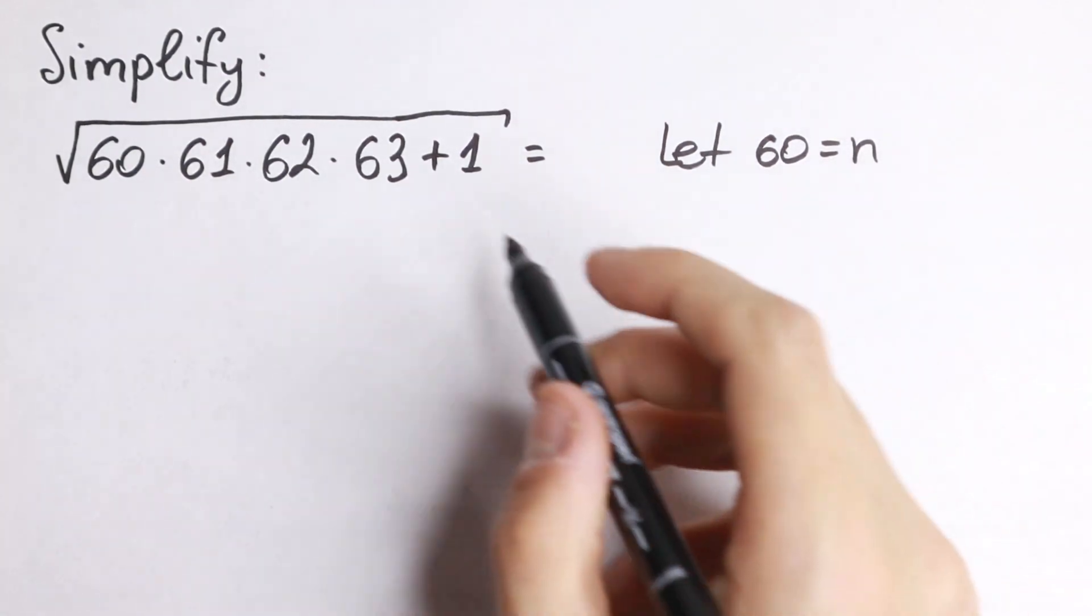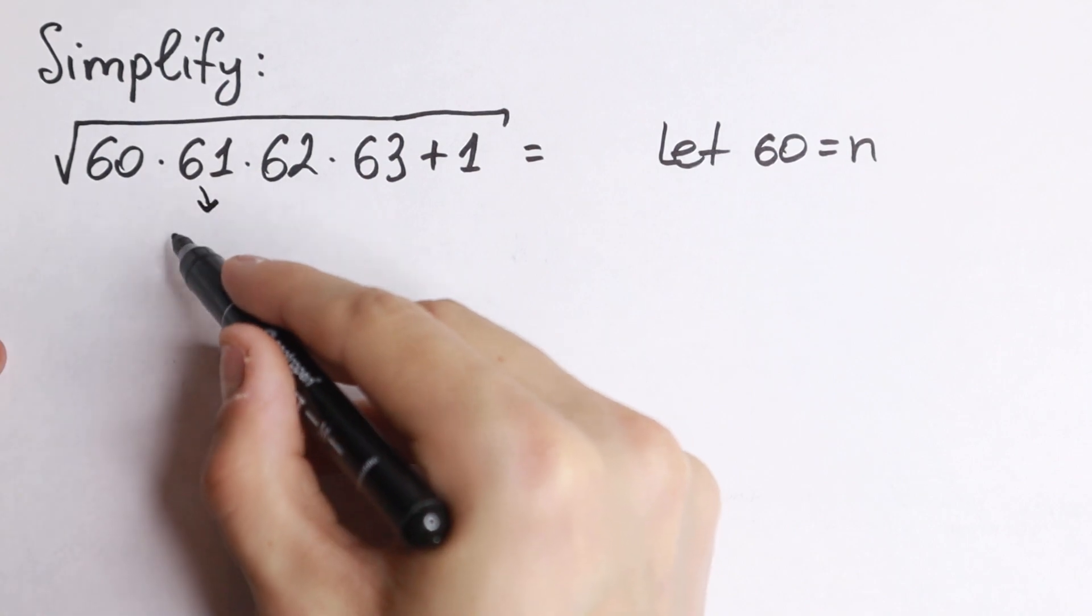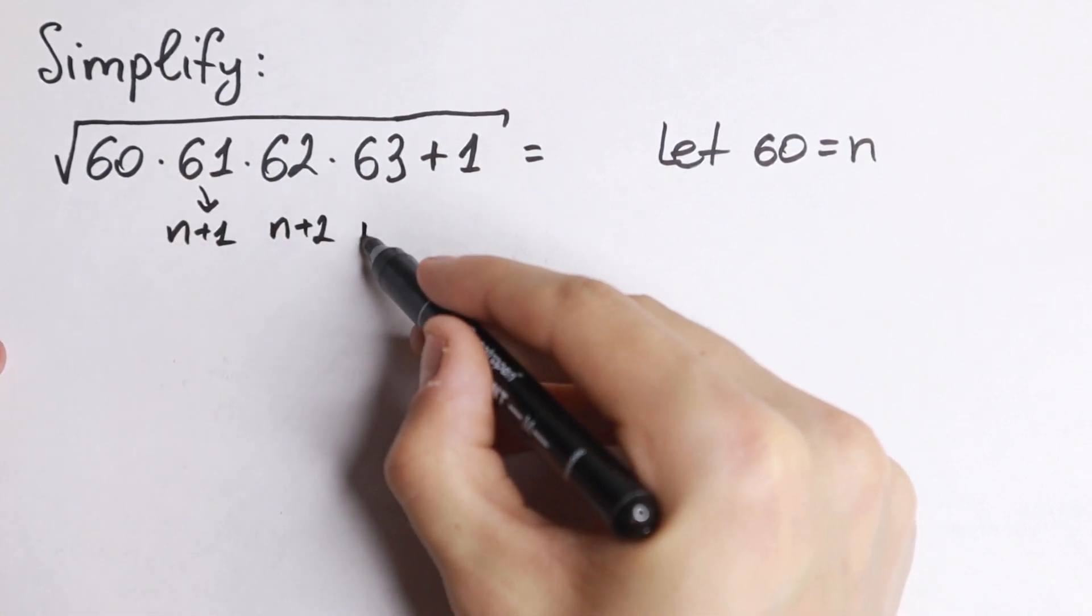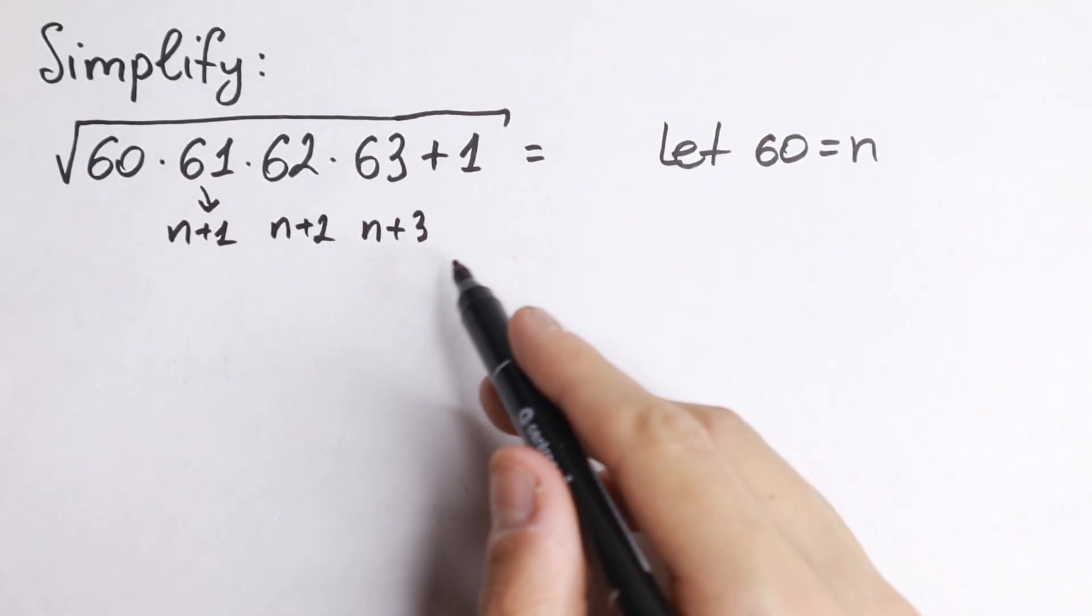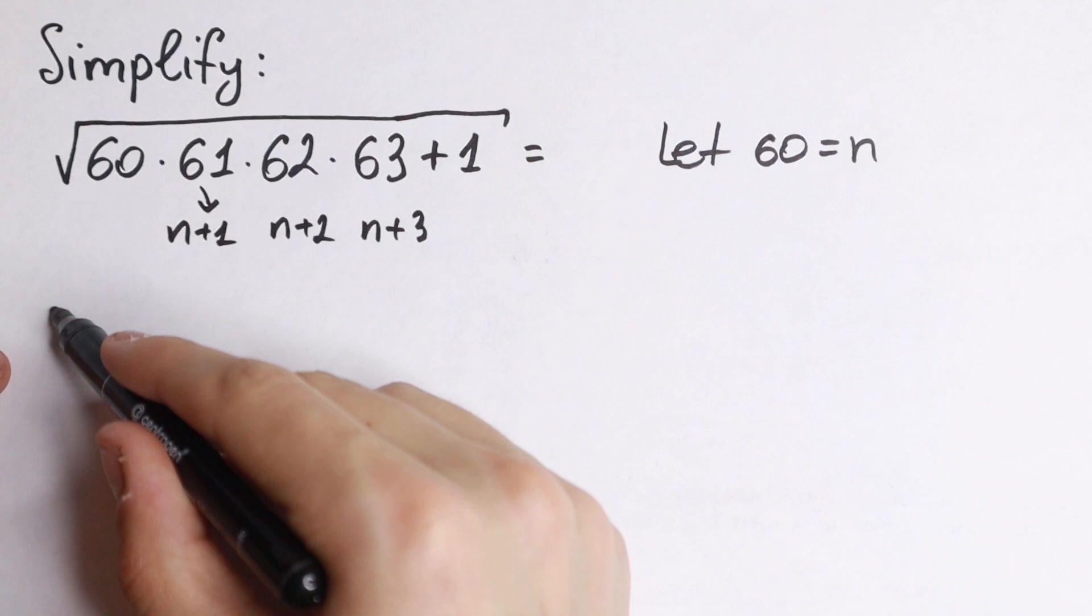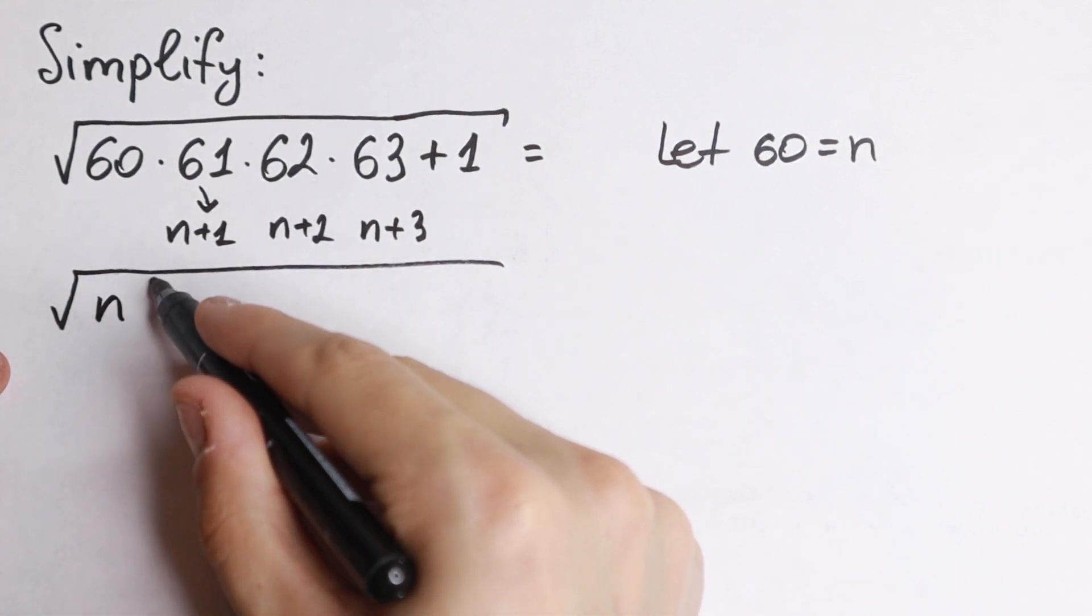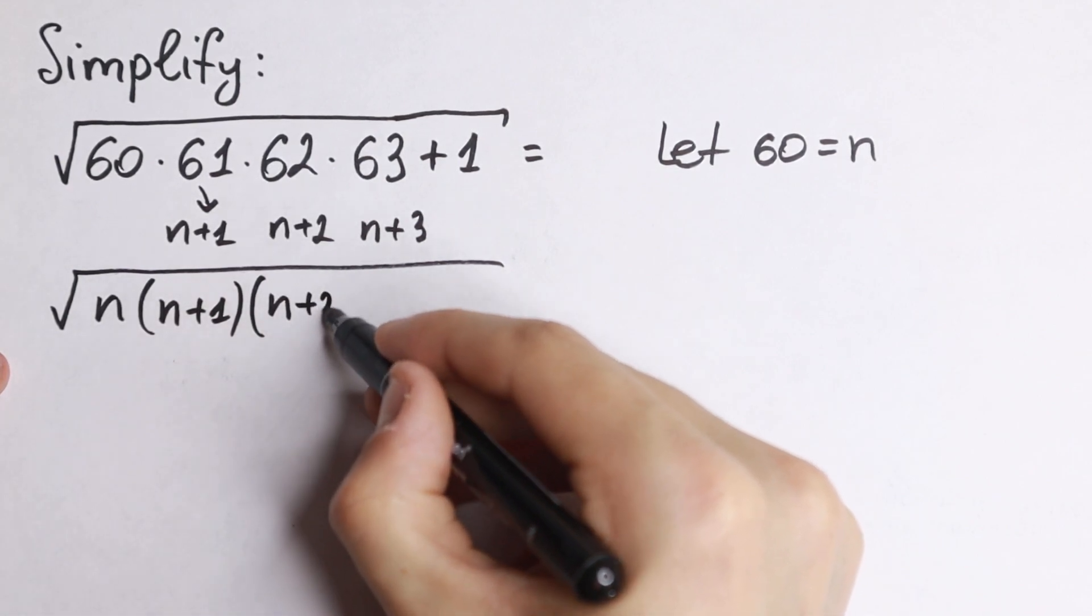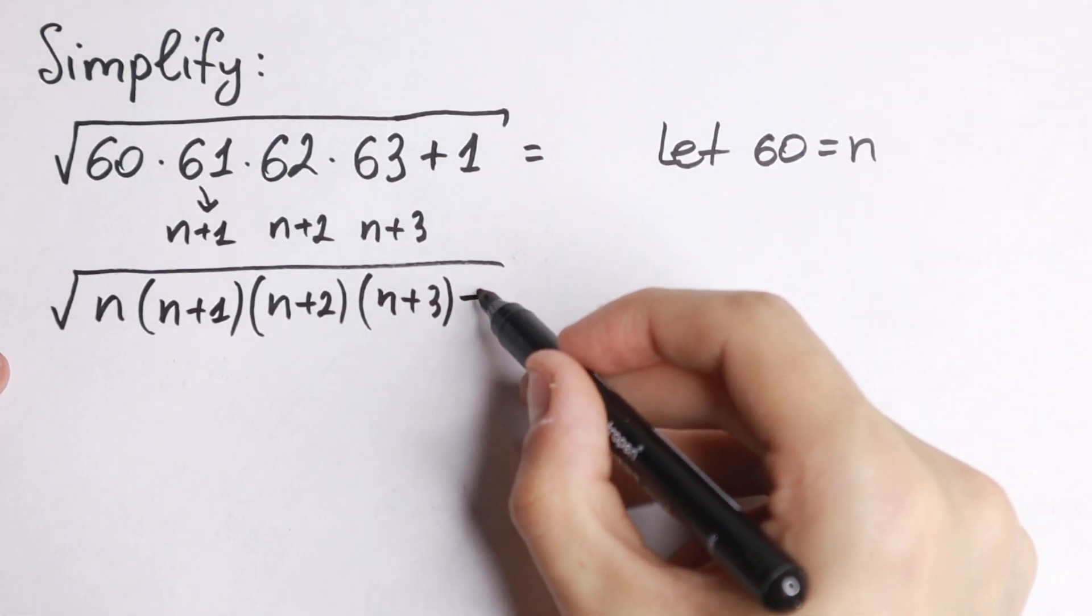If 60 equals n, what we will have? We change 60 by n, and 61 will be n plus 1, then n plus 2, and then n plus 3. So we will have square root of n times n plus 1 times n plus 2 times n plus 3 plus 1 in the end.